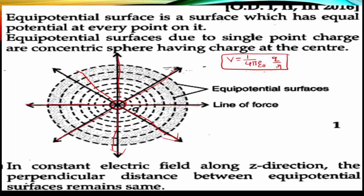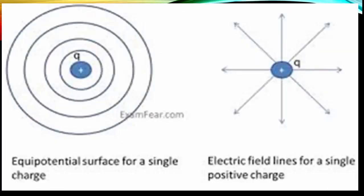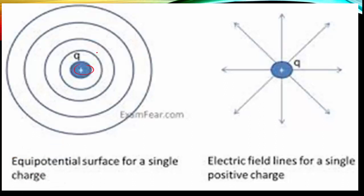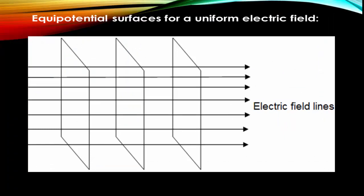In the diagram, the perpendicular lines confirm that the lines of forces point radially outwards and are perpendicular to the equipotential surfaces at all points. This diagram indicates the equipotential surface due to a point charge. Another diagram shows electric field lines for a single point charge — do not confuse these two: one shows electric field lines, the other shows equipotential surfaces for a single charge.